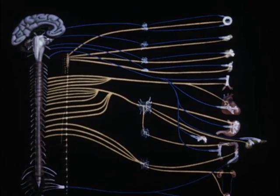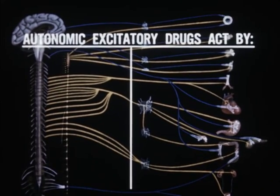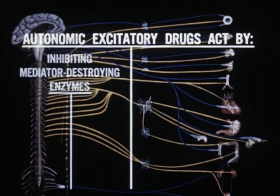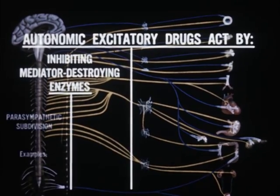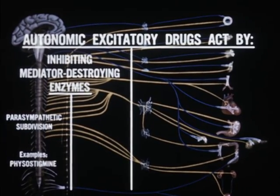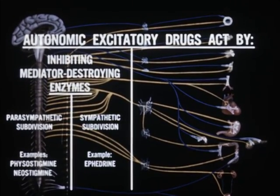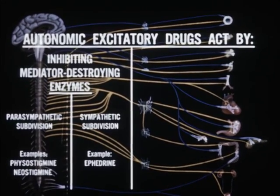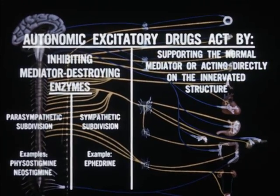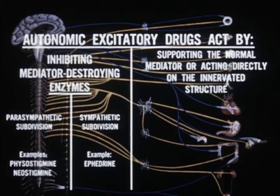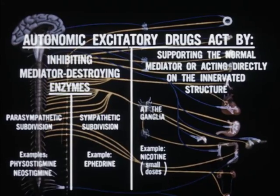Stimulation of the autonomic nervous system, which is accomplished by the so-called excitatory drugs, can be brought about by one of two types of action. First, a drug may act to inhibit the mediator-destroying enzyme, and thus permit the accumulation of the chemical mediator. Examples of this type are physostigmine and neostigmine, acting within the parasympathetic subdivision. Ephedrine may act in a similar way at the sympathetic effectors. Second, excitatory drugs may act by supporting the normally occurring mediator, or by acting on the innervated structure as does the mediator itself.